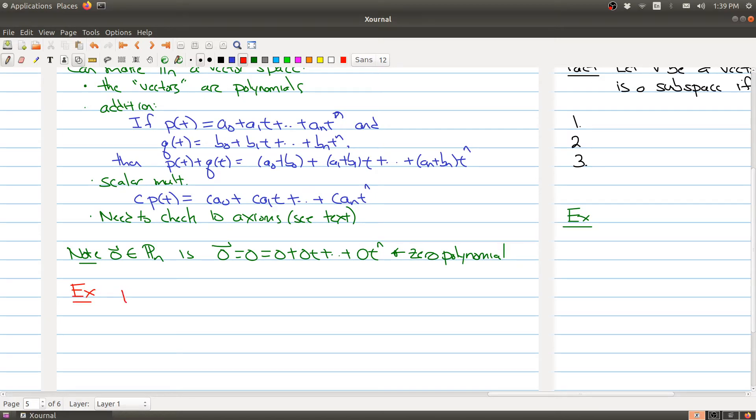I could take p(t) to be the polynomial 1 + 2t². And q(t) could be -1 + 2t + 3t². And both of these guys live in P2 because they're polynomials of degree 2 or less.